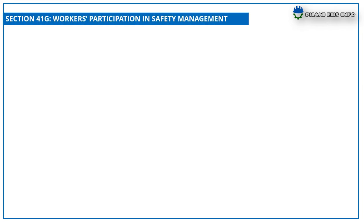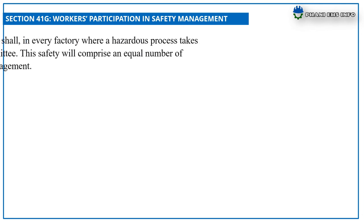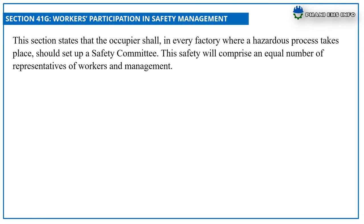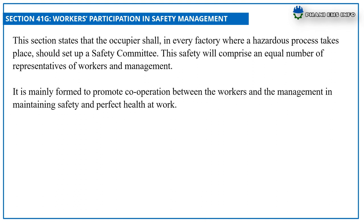Section 41G: Workers' Participation in Safety Management. This section states that the occupier shall, in every factory where a hazardous process takes place, set up a safety committee. This safety committee will comprise an equal number of representatives of workers and management, and is mainly formed to promote cooperation between workers and management in maintaining safety and good health at work.